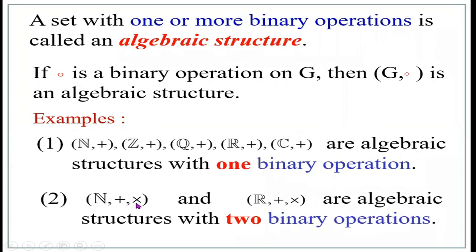N comma plus comma multiplication — addition and multiplication are both binary operations on the set of natural numbers. Therefore, the ordered triads N comma plus comma multiplication, and R comma plus comma multiplication, are algebraic structures with two binary operations.